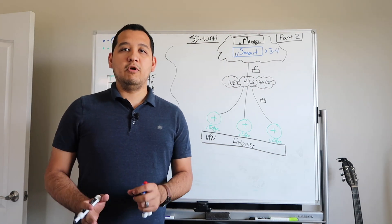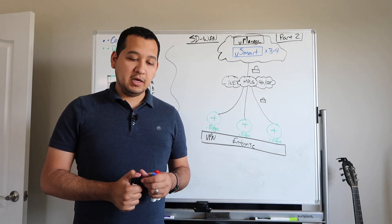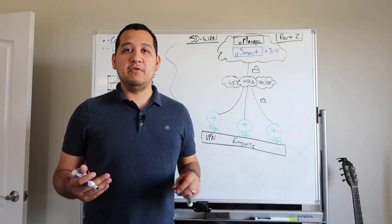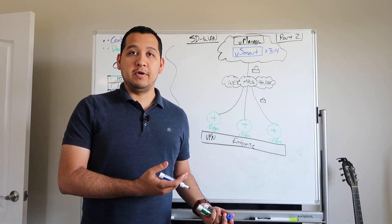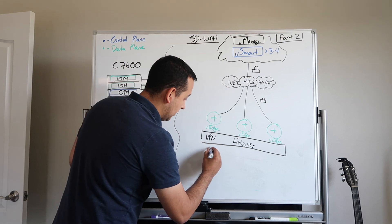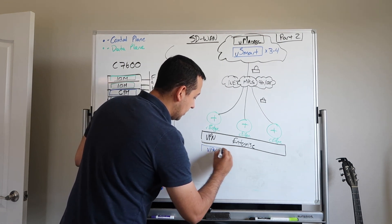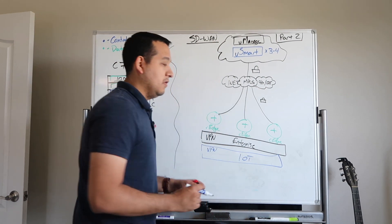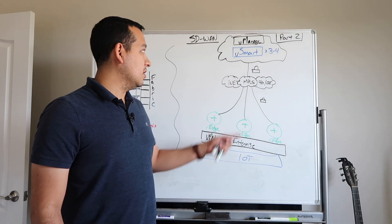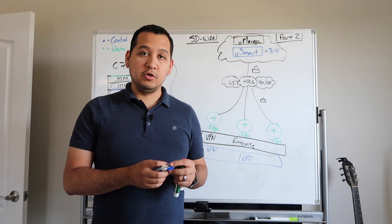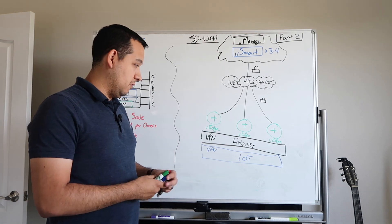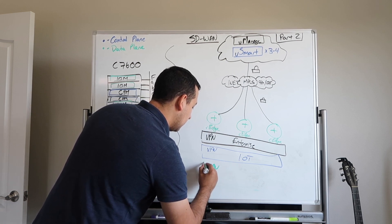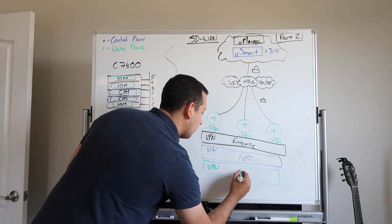Let's say you had an IoT network that you wanted to be completely separate from your enterprise environment. You do this because you don't want potentially some kind of compromised IoT device to then leak and compromise your internal network. So you create a new VPN just for your IoT. This is its own separate routing table controlled by the same Vsmart in the control plane. You can have another one here for maybe guest - let's do one more VPN for guest.